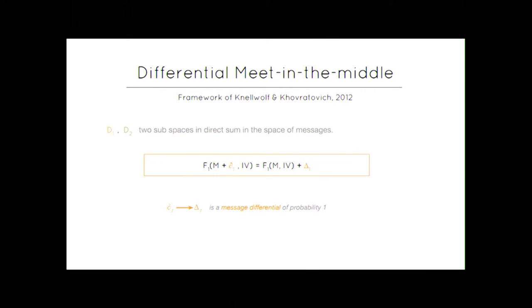It means that delta 1, delta 1 is a message differential of probability 1. You will also require that the F2 inverse function verifies the same property for all the elements of D2, which is, again, the property of having that for every element D2 exists a big delta 2, such that this is a differential, a message differential of probability 1.